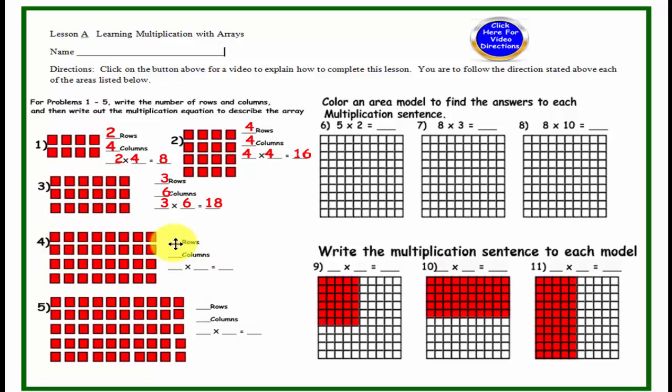Problem number 4, we have 4 rows, 8 columns, and our multiplication sentence is 4 times 8 is 32. So here is row 1, 2, 3, 4, column 1, 2, 3, 4, 5, 6, 7, 8.